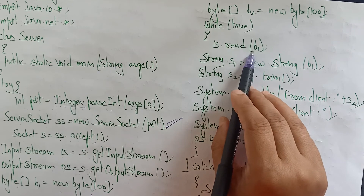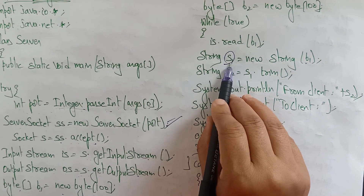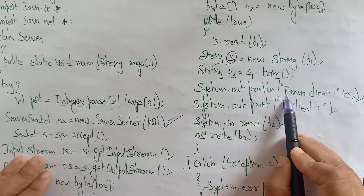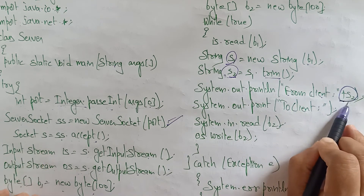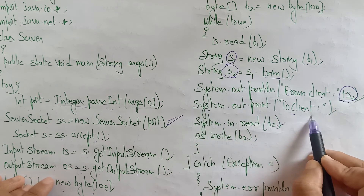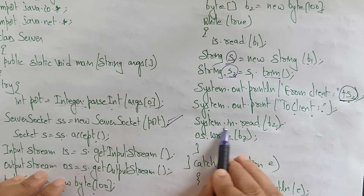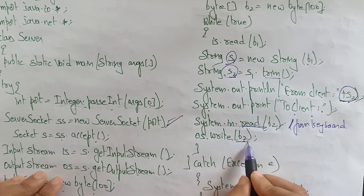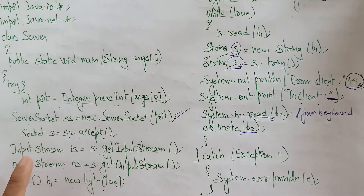The server first reads data into b1 from the client: is.read(b1). Place that in String s1 = new String(b1), then s2 = s1.trim() to remove whitespace. Print 'From client: ' + s2 — the message from the client is printed on the command prompt. Then for the server's turn to respond, print 'To client:', read b2 from keyboard with System.in.read(b2), then write with os.write(b2). If any error occurs, an exception is thrown.